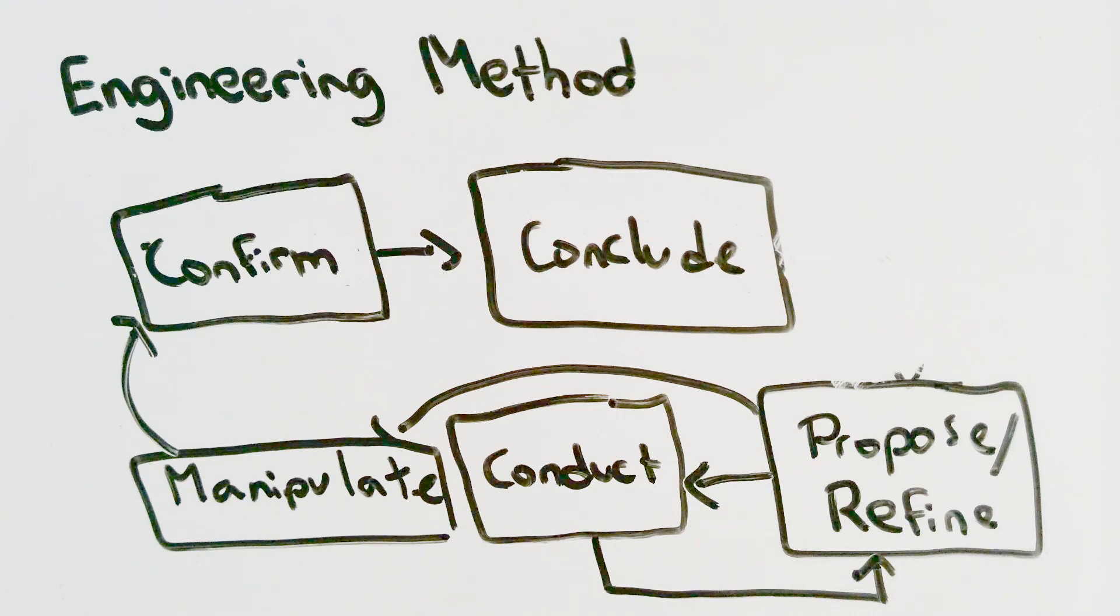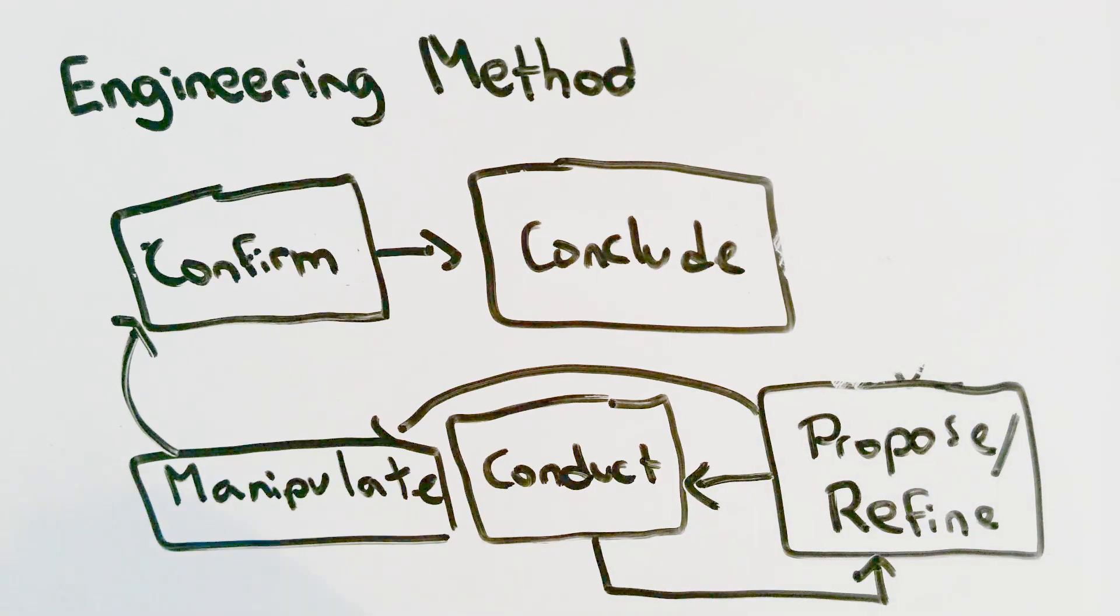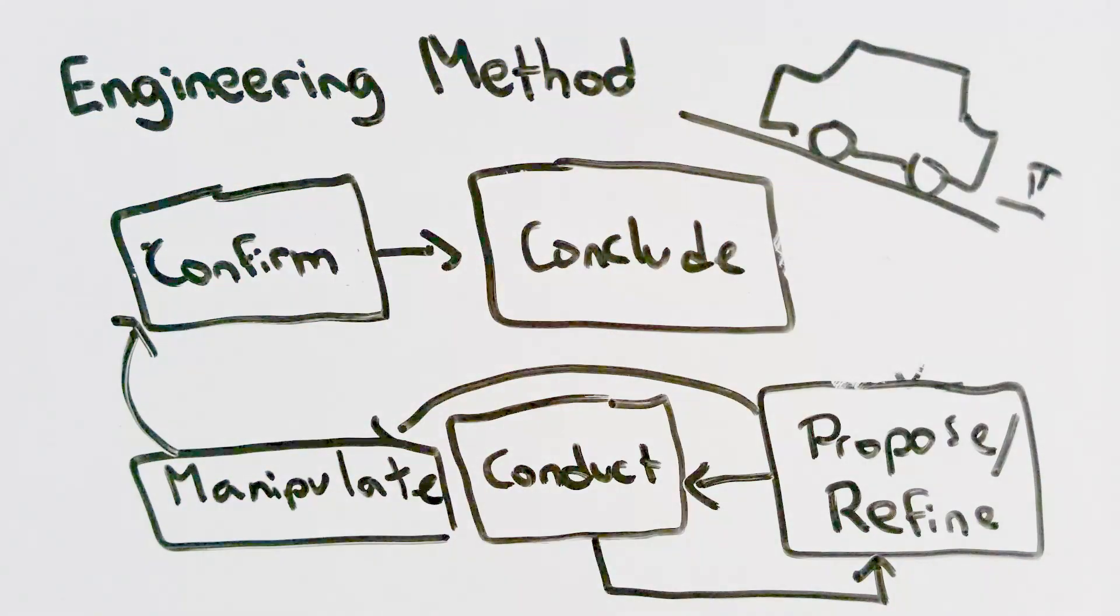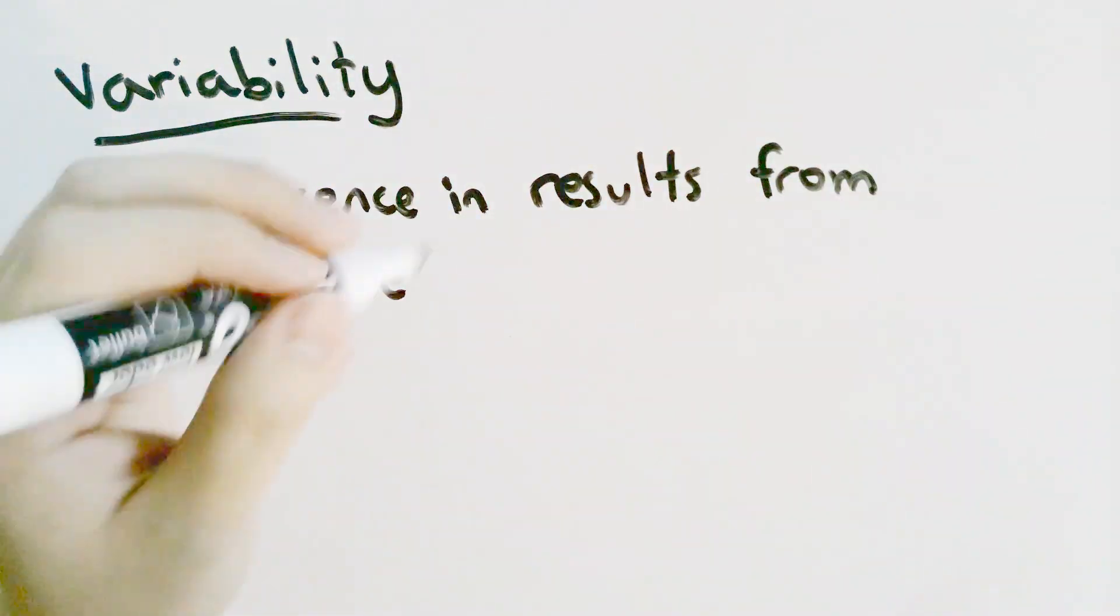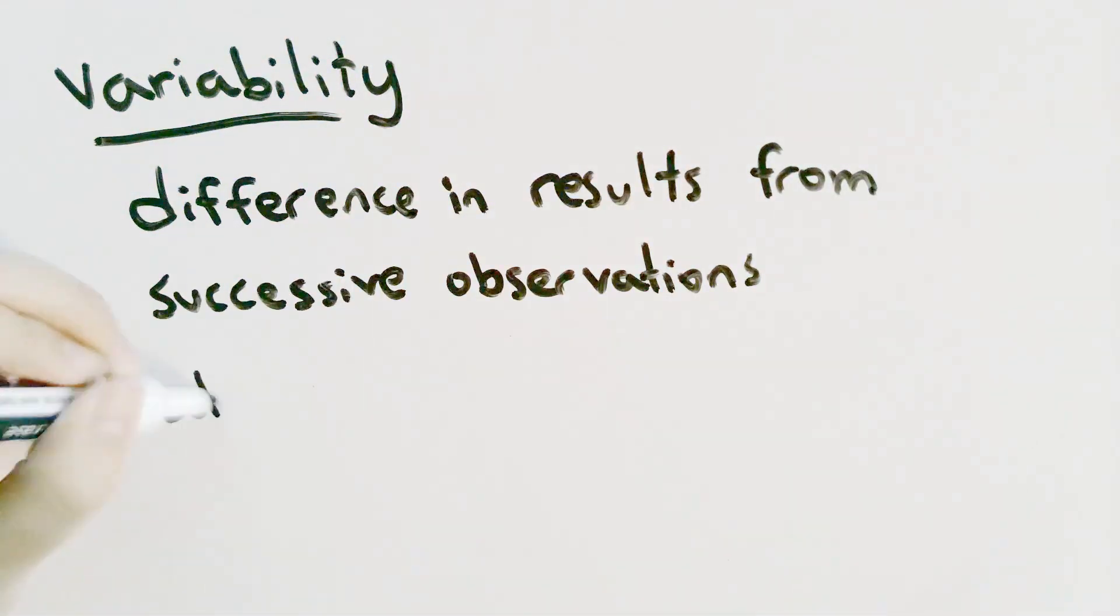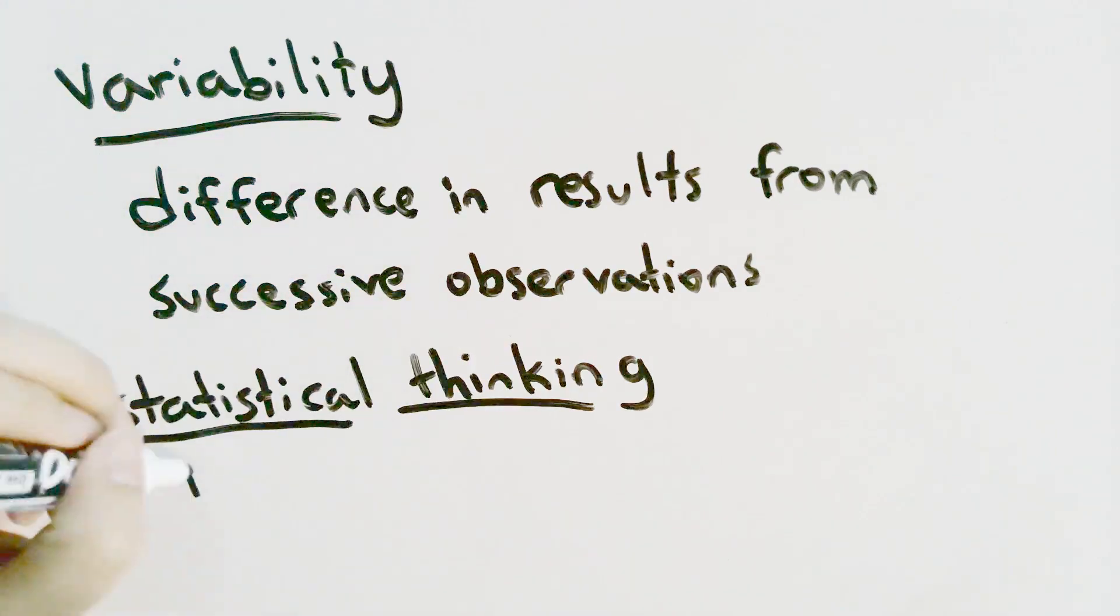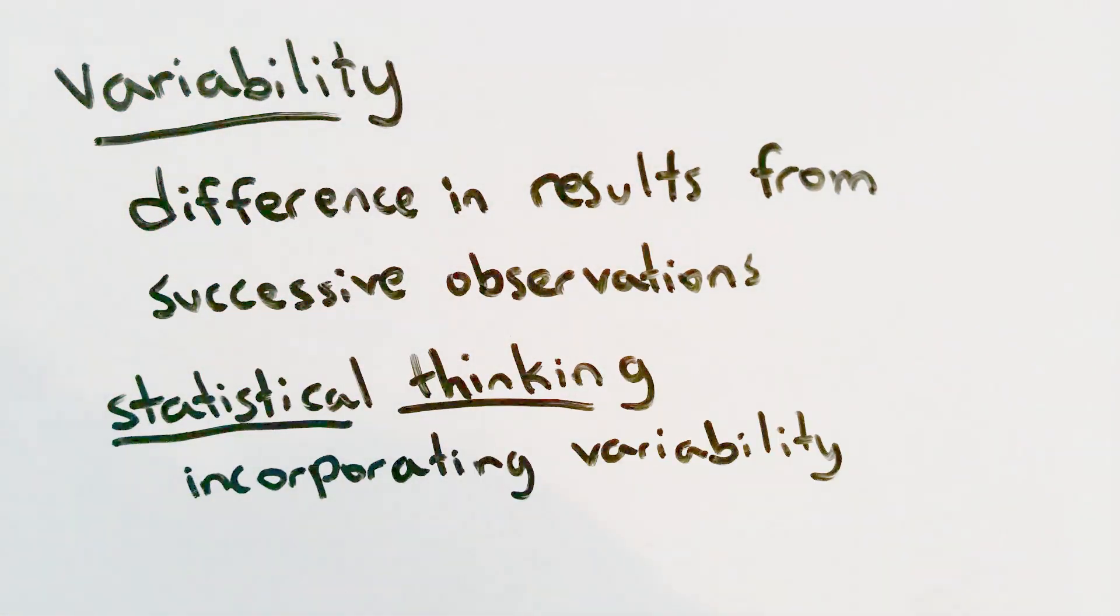For example, suppose you want to measure the gas mileage of your car several times. Would you always get the same mileage? Probably not. The difference in your measurements is called variability. We can formally define variability as the difference in results from successive observations of a system. When we incorporate variability into our engineering method, this is called statistical thinking.